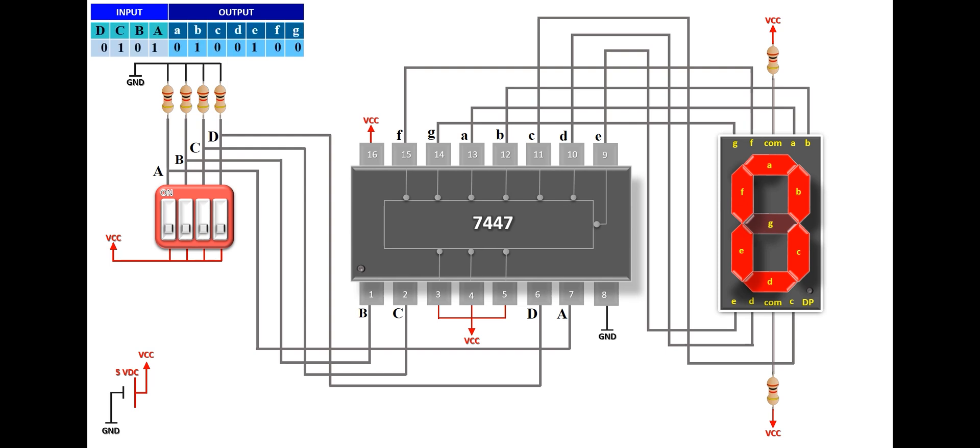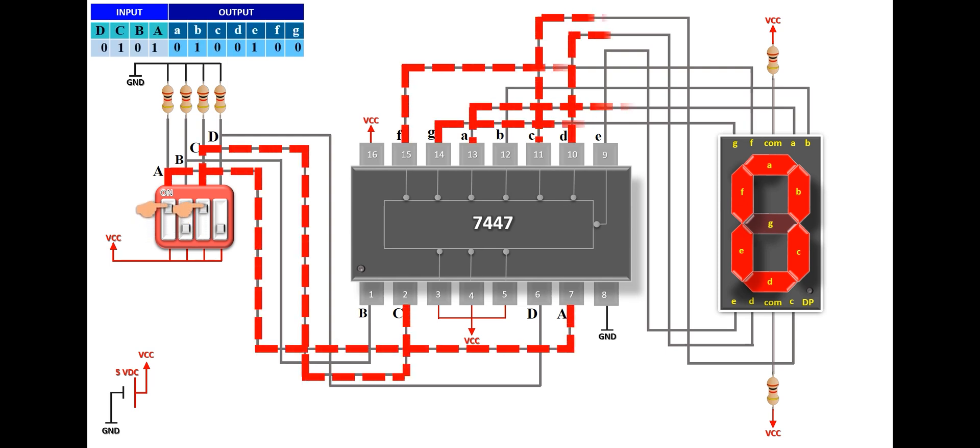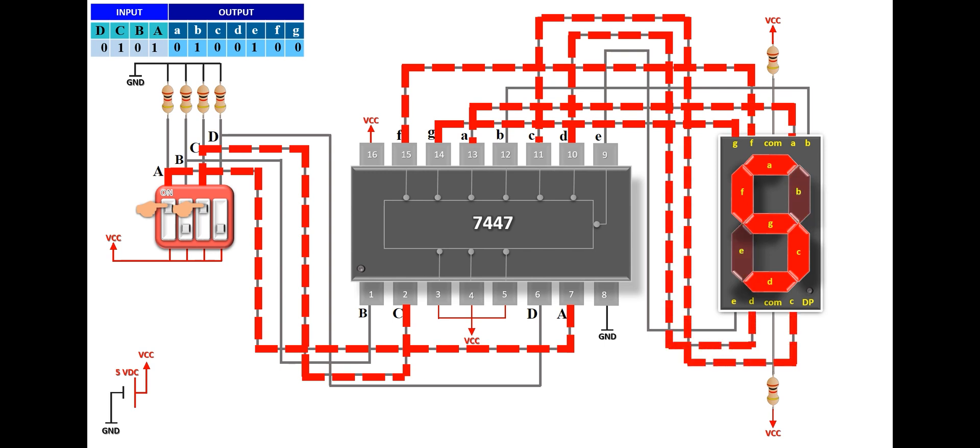For binary number 5, pins A and C must be 1. At the output, only pins B and C are 1, and the rest are 0.